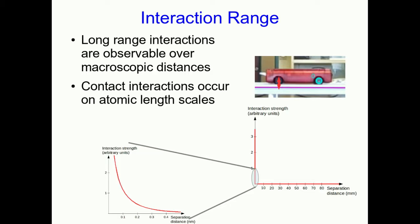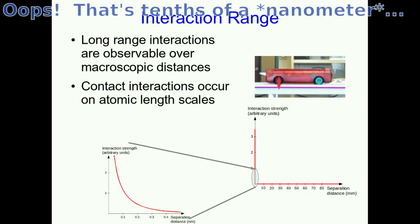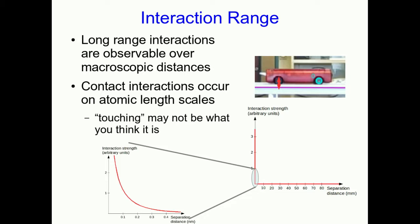But the interaction range is only a few tenths of a millimeter. This explains for us later on why contact interactions can have almost any strength. If you press down on the cart, you are in fact pressing the wheel closer to the track by a few tenths of a millimeter, and the interaction gains strength. So this is telling you that touching may not quite be what you think it is.